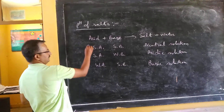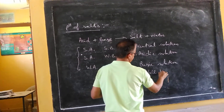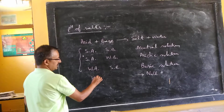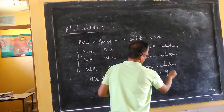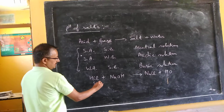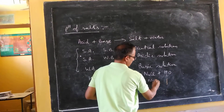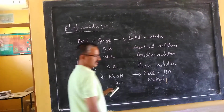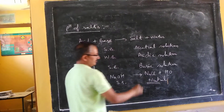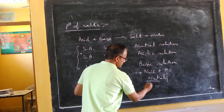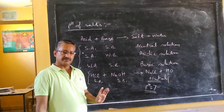Let us take one example. Take sodium chloride (NaCl). It is formed by the combination of hydrochloric acid (HCl) and sodium hydroxide (NaOH). HCl is a strong acid and NaOH is a strong base. So this will be a neutral solution — if we dissolve NaCl in water, the pH value will be equal to 7, and we will say this solution is neutral.